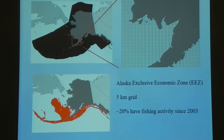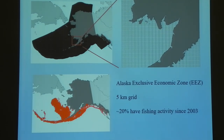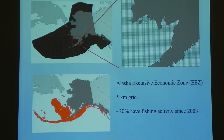Our model works on five-kilometer grid cells. This gives you a sense of that scale compared to the whole domain. Our whole domain is the EEZ — the 200-mile radius exclusive economic zone for U.S. vessels. Just to give you an idea of where fishing is actually happening, this shows all fishing tracks since 2003 overlaid on this grid. About 20% of these grid cells have at least some touch of fishing since 2003.